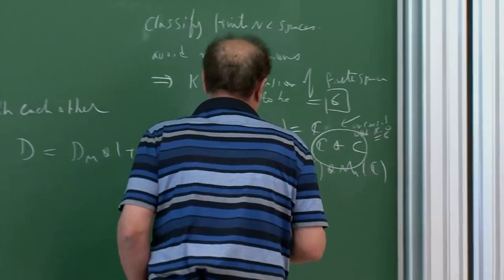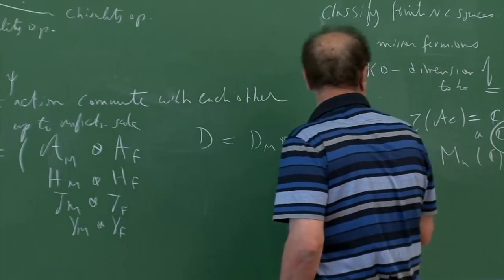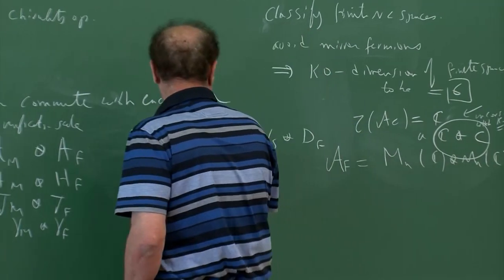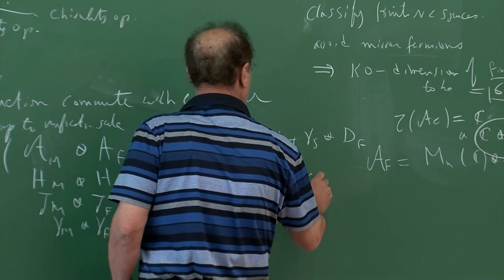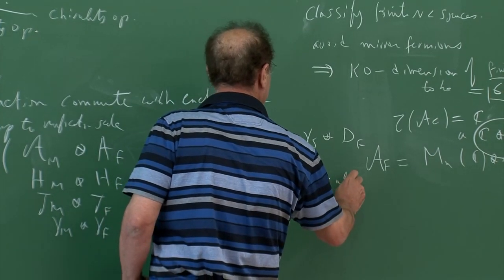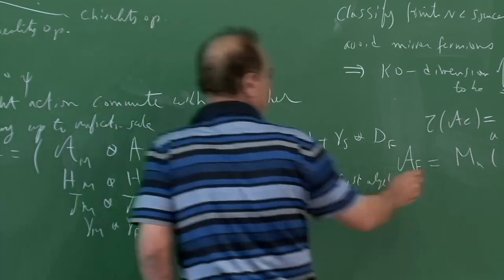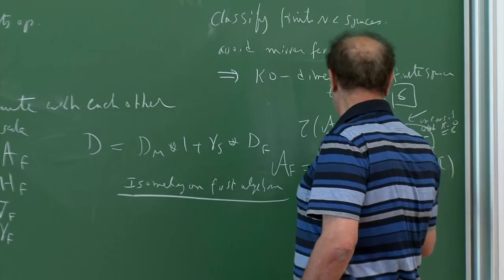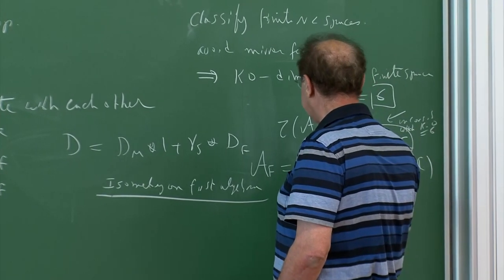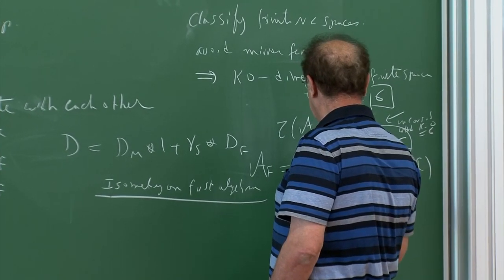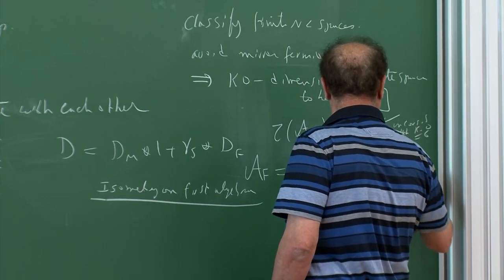We also imposed an isometry on the first algebra — this is an assumption — which reduced it to an algebra of quaternions. The first non-trivial example was M₂(ℍ) ⊕ M₄(ℂ), and the next one in the sequence would be M₄(ℍ) ⊕ M₈(ℂ), giving a tower of possible algebras. The simplest is M₂(ℍ) ⊕ M₄(ℂ).